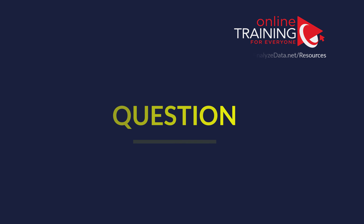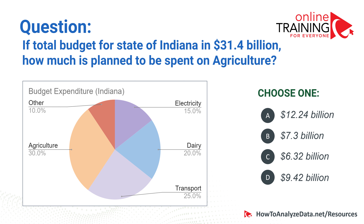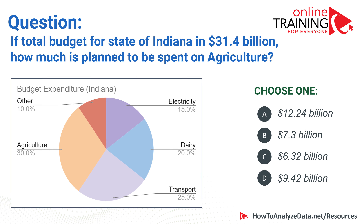Now let's look at a question which tests your knowledge of percentages and logical reasoning, frequently used as part of math reasoning, abstract reasoning, numerical reasoning, and logical reasoning tests. If the total budget for the state of Indiana is $31.4 billion, how much is planned to be spent on agriculture? You have four choices: $12.24 billion, $7.3 billion, $6.32 billion, and $9.42 billion. You have a chart showing different percentages for different types of expenditures. Which one do you think is the right choice?